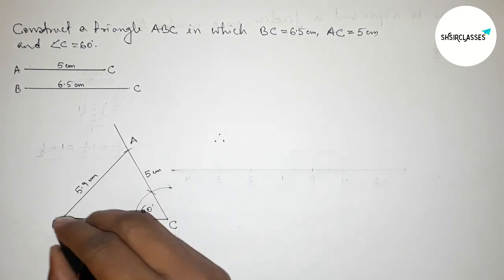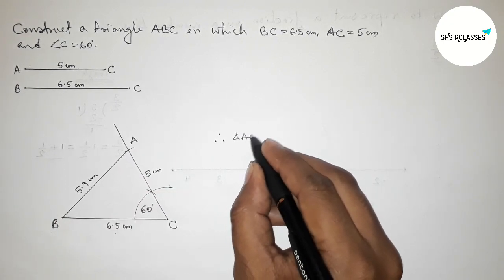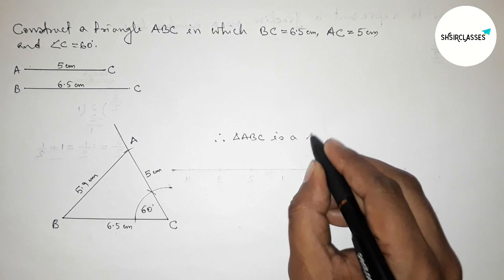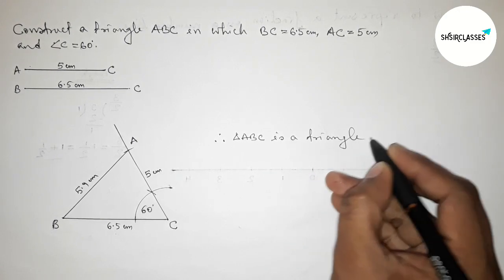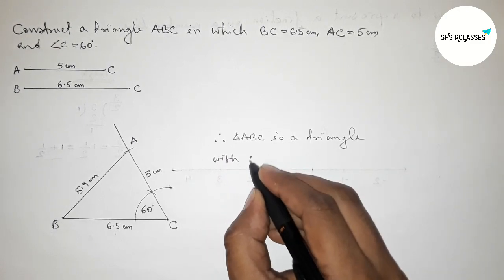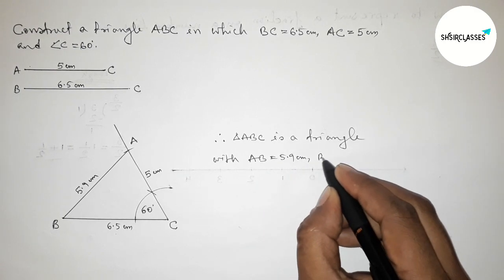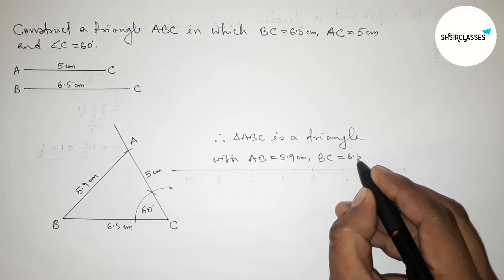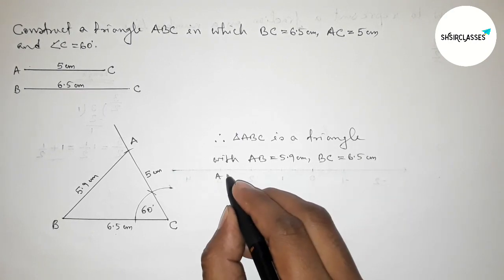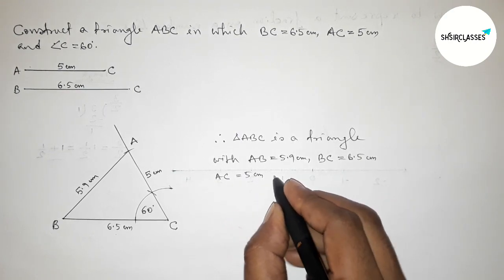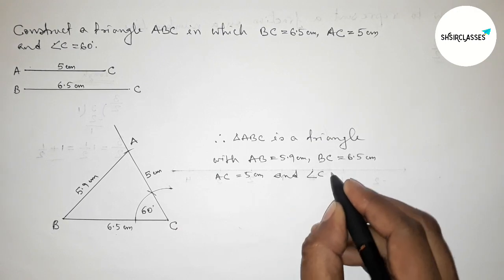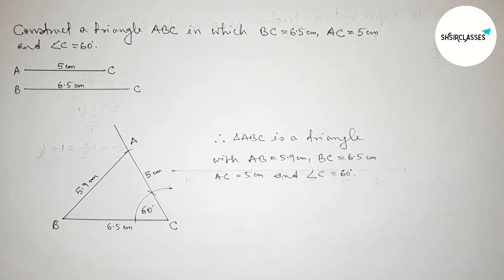Therefore, triangle ABC is constructed with sides AB equals 5.9 centimeter, BC equals 6.5 centimeter, AC equals 5 centimeter, and angle C equals 60 degrees. That's all — thanks for watching. If this video is helpful to you, please share it with your friends.